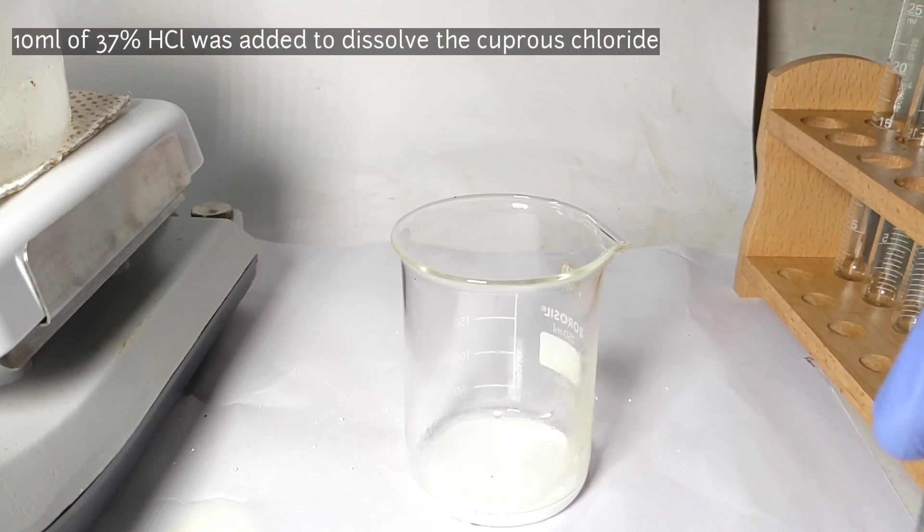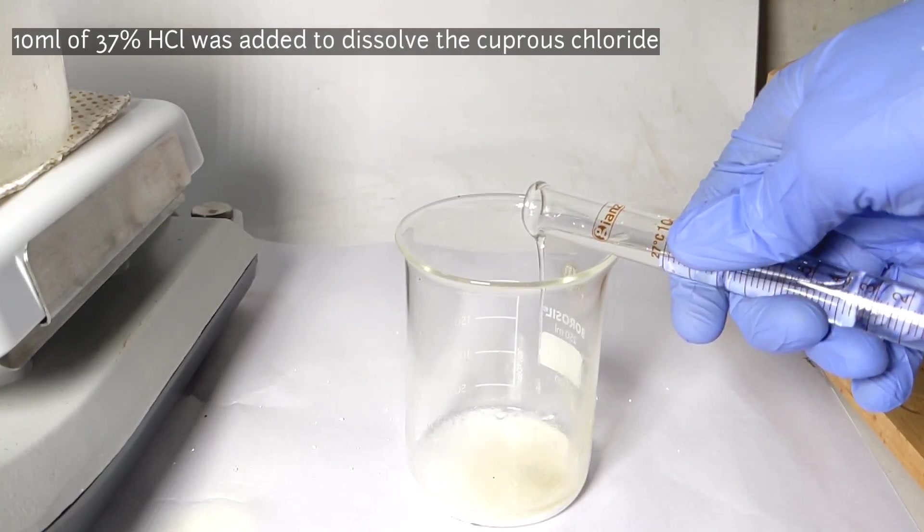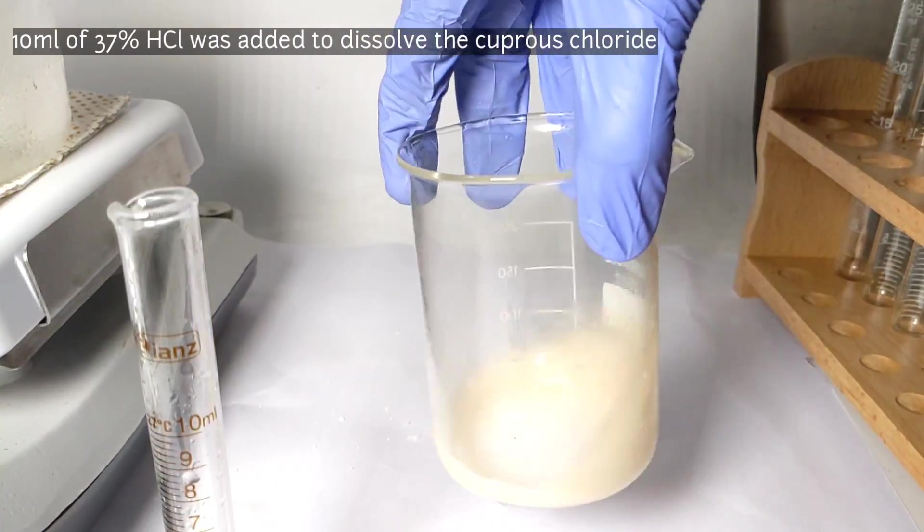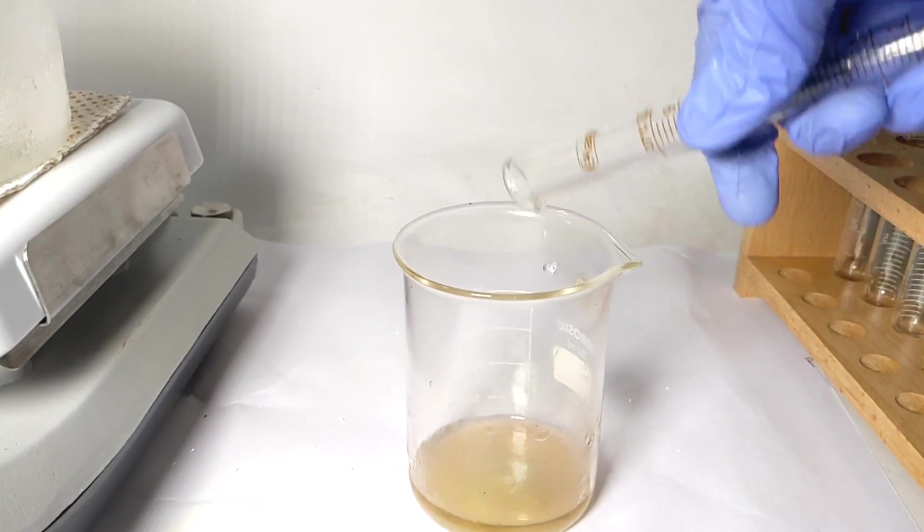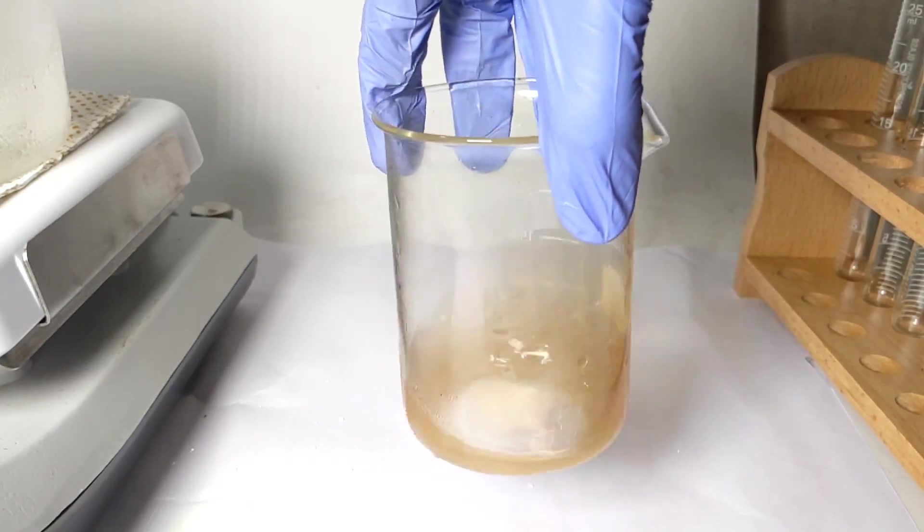It was then washed multiple times with cold distilled water to remove much of the acid. The freshly prepared cuprous chloride was then dissolved in 10 milliliters of 37% hydrochloric acid. On adding the hydrochloric acid and shaking it well, the cuprous chloride easily dissolves in it giving a dark clear solution.